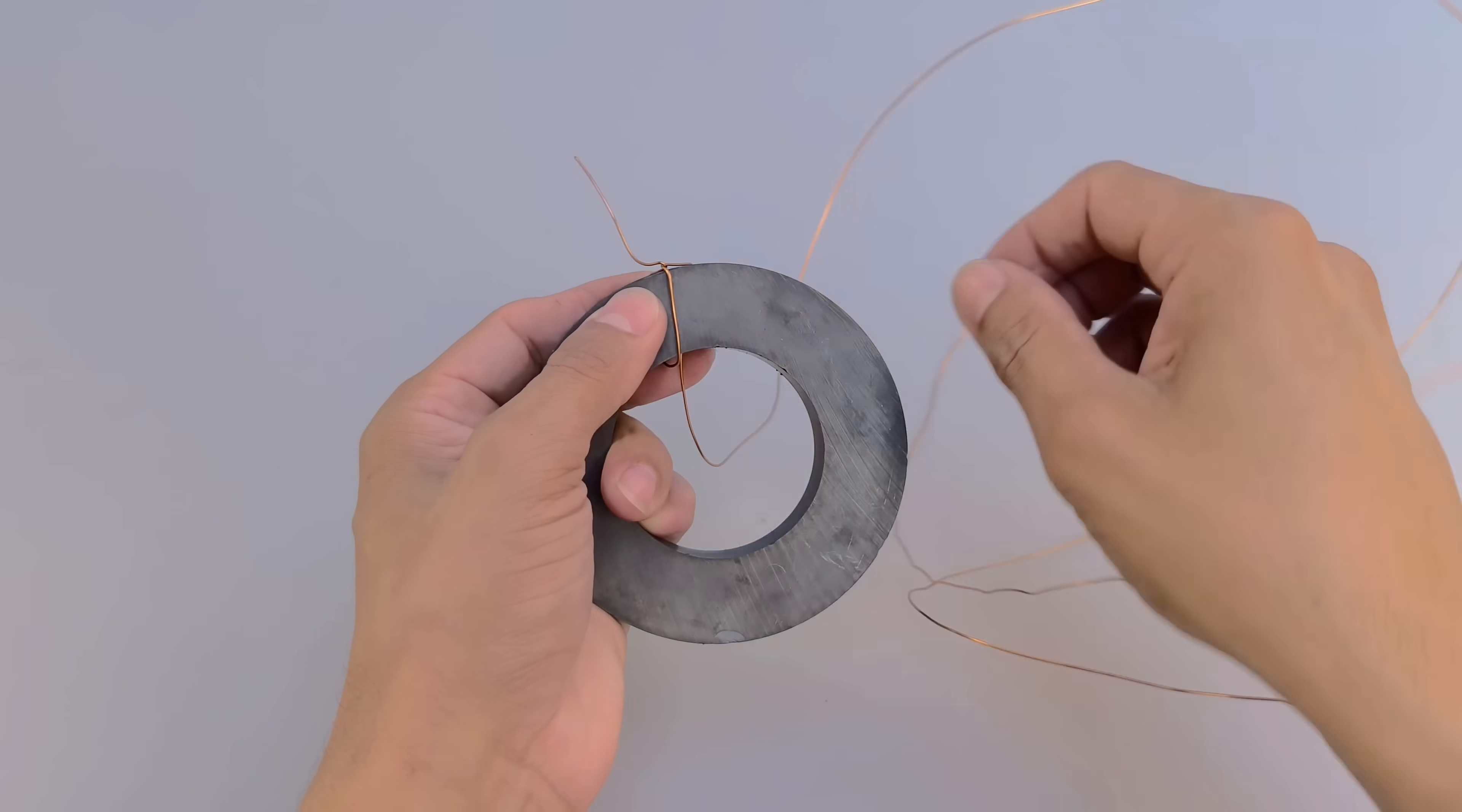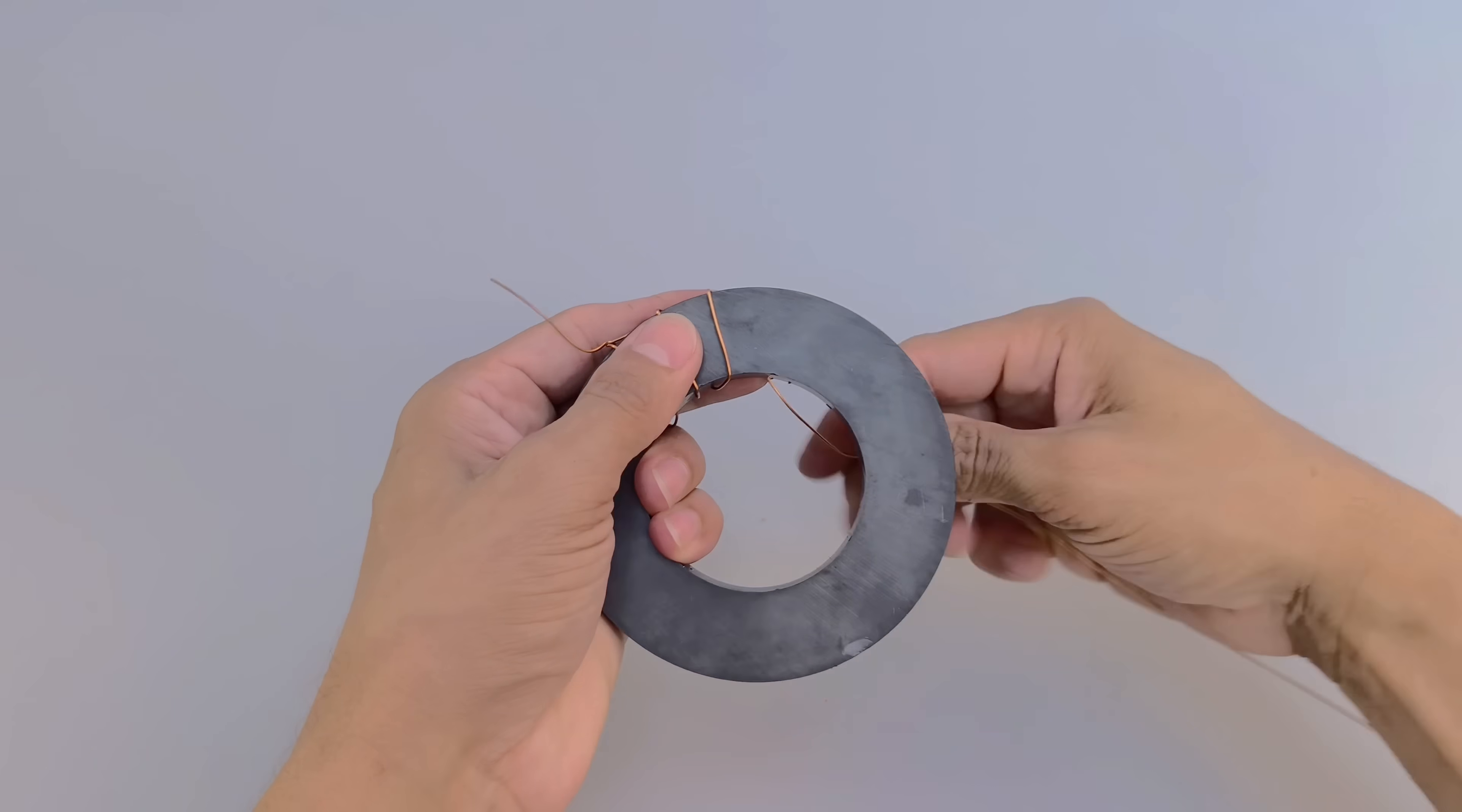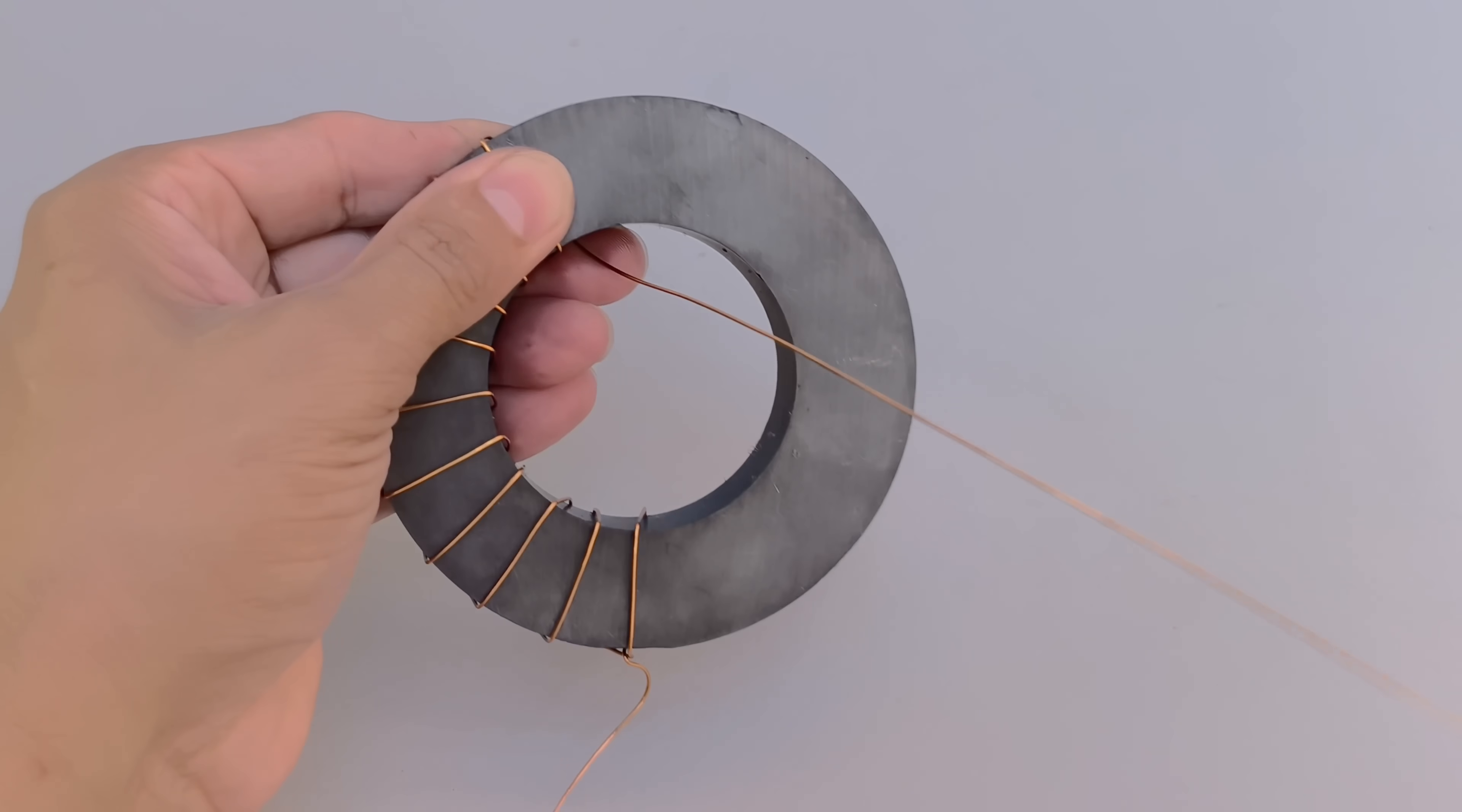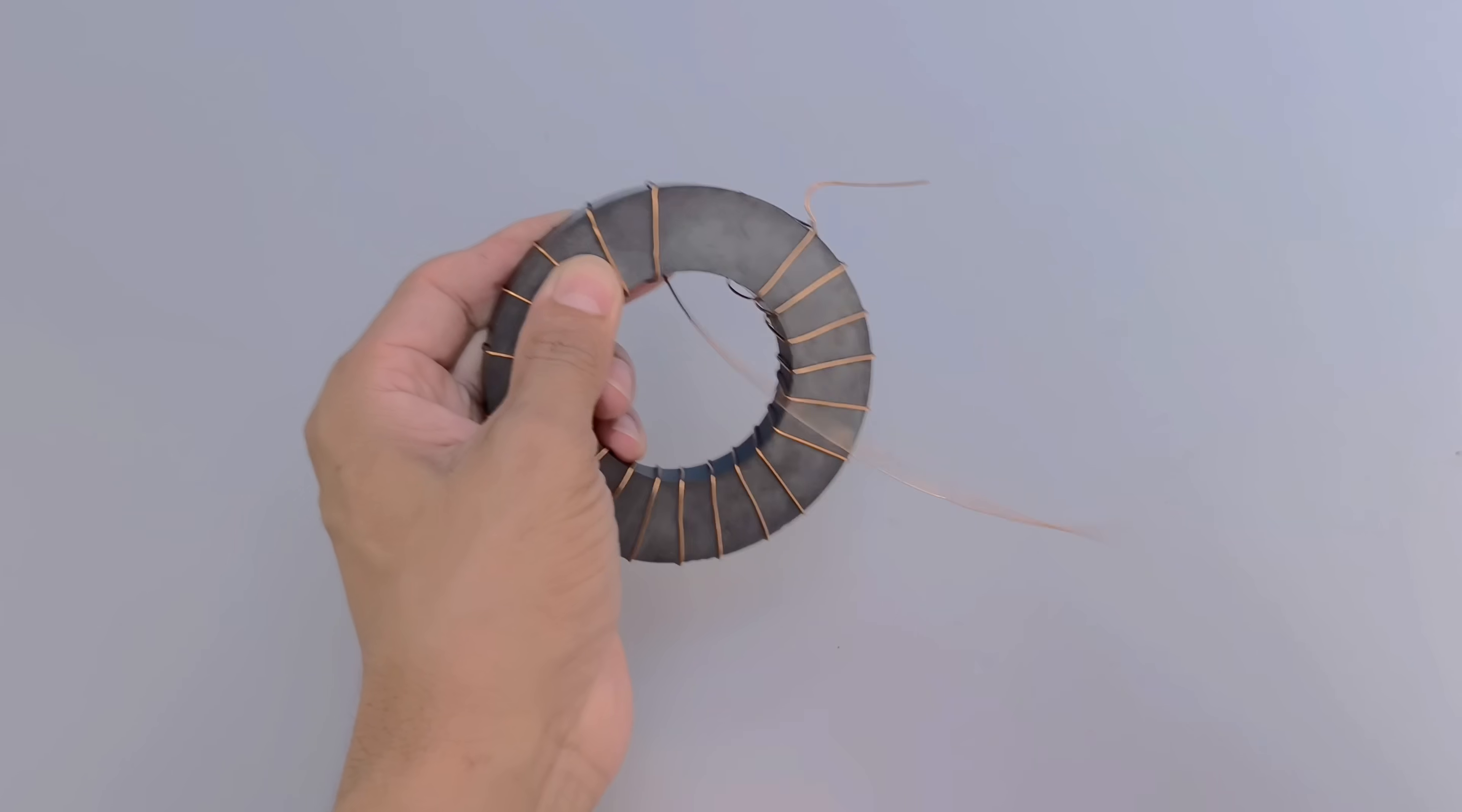The copper wire is then carefully wound around the magnet, forming an electromagnetic coil. There are approximately 22 turns, always well organized, firm, and adjusted, to ensure the effectiveness of the generated magnetic field. This winding must be done carefully, keeping the turns well aligned without overlapping or gaps to avoid loss of efficiency. The precision of this process is essential for the functioning of the device, as it directly influences the intensity of electromagnetic induction, a concept that Tesla mastered like few others and applied in several of his revolutionary inventions.